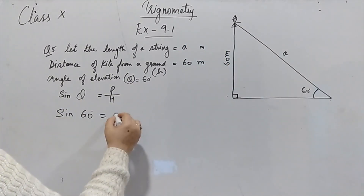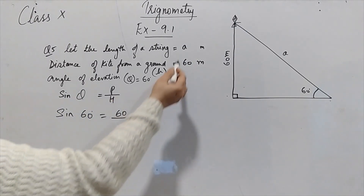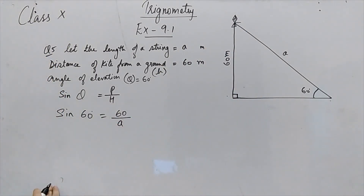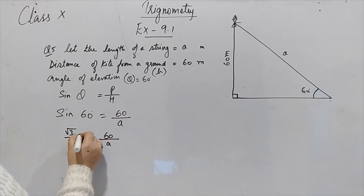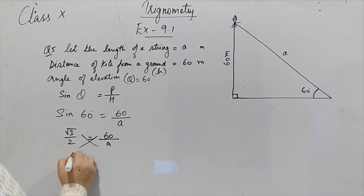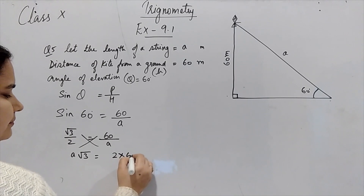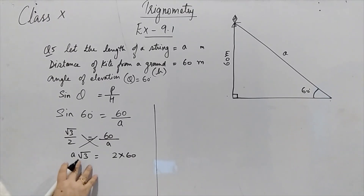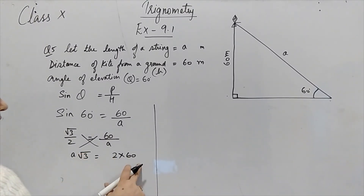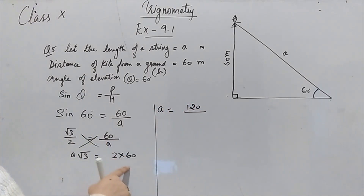Sin 60 degrees equals perpendicular — that is the height, 60 meters — upon hypotenuse, which is what we need to find: small 'a'. So sin 60 = √3/2 = 60/a. Cross multiply: a√3 = 60 × 2. Now, a equals 120 upon √3.